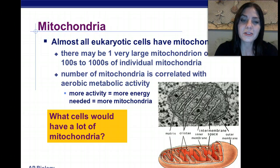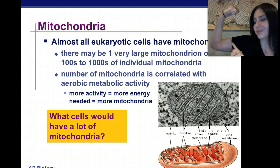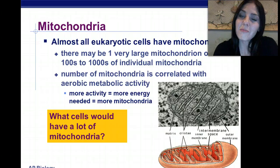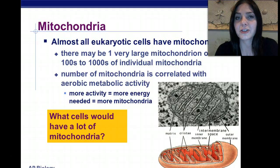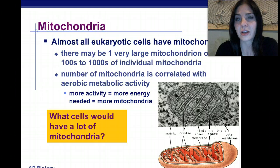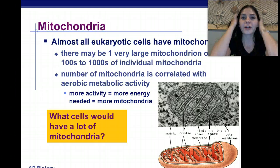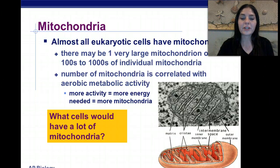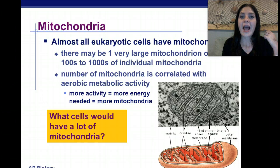What type of cells do you think would have a lot of mitochondria? Muscle cells — they need lots of energy. Another type of cell that needs lots of energy are our nerve cells. They're constantly transmitting impulses from our brain to the rest of our body and back. So if I touch a hot stove, I need all of that energy to tell my brain ouch, it's hot, and remove my hand.